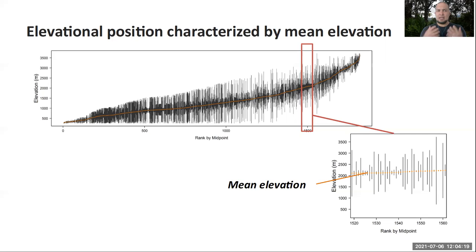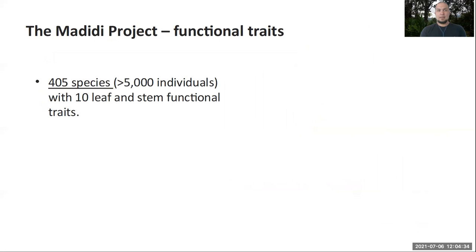For our analysis, we're particularly interested in the elevational position, which we characterize using the mean elevation. High values of mean elevation suggest that the species has a distribution concentrated in the highlands, while low values indicate the species is mainly in the lowlands.